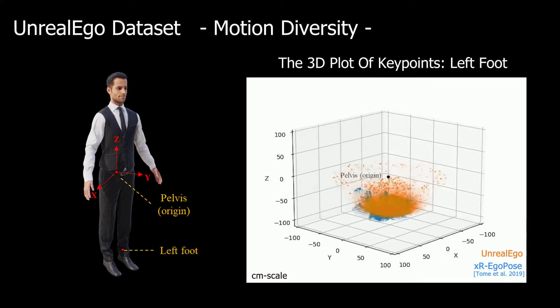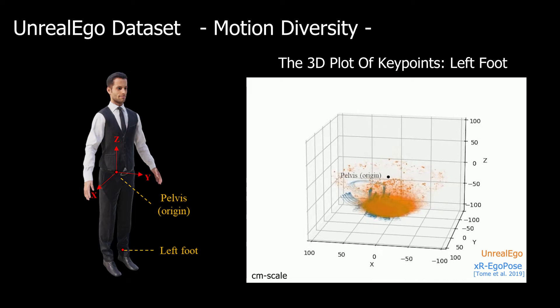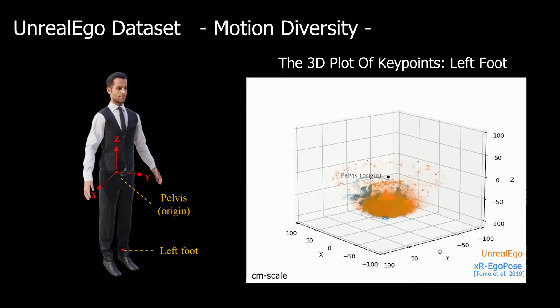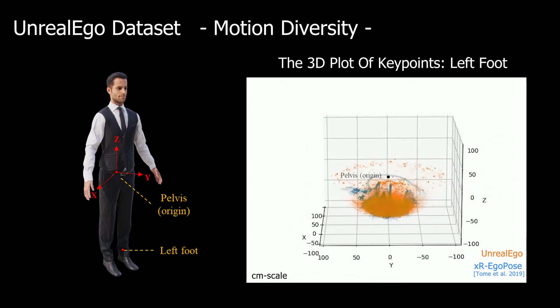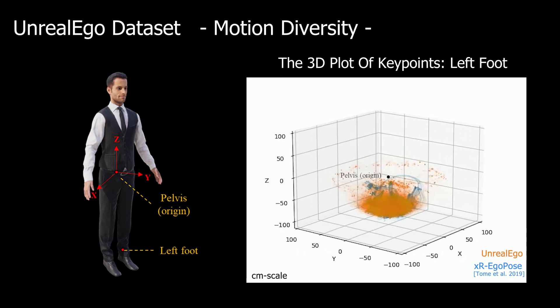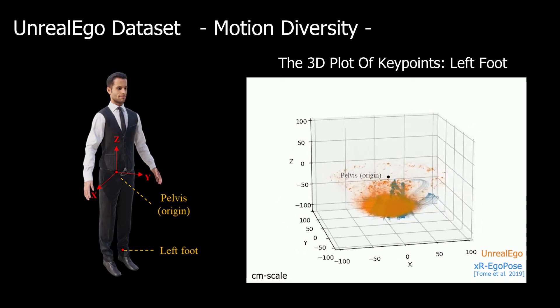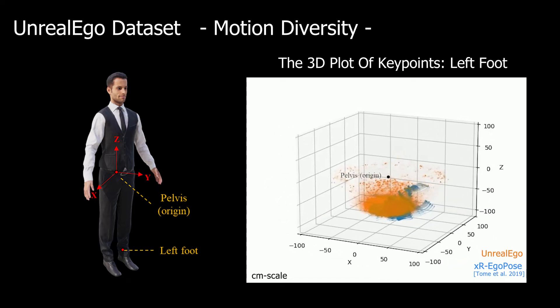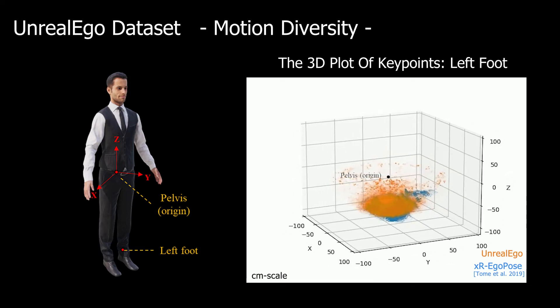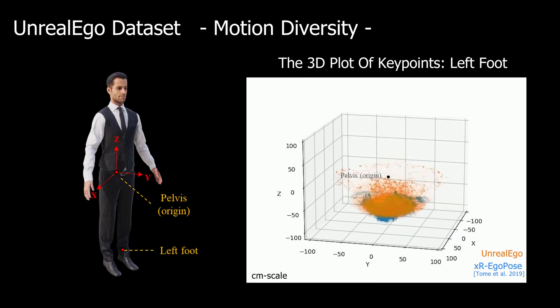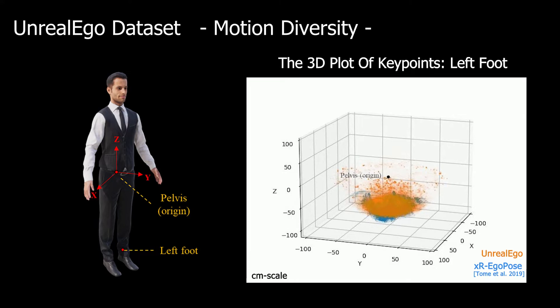We also show the distributions of the left foot. Again, compared to the existing dataset, the keypoints of UnrealEgo are more widespread, even above the pelvis. This suggests that UnrealEgo contains motions with a wider variety of left foot positions. Here, we visualize example motions, such as backflip, sliding, and standing.